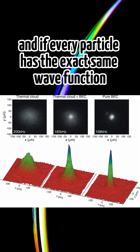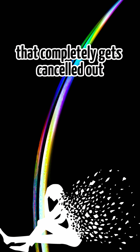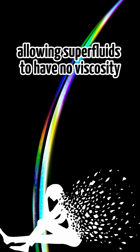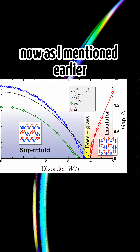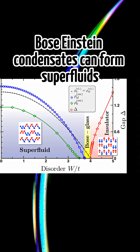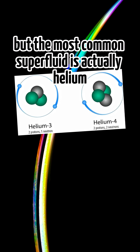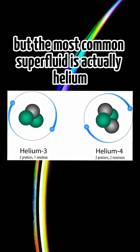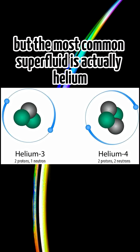And if every particle has the exact same wave function, that completely gets cancelled out, allowing superfluids to have no viscosity. Now as I mentioned earlier, Bose-Einstein condensates can form superfluids, but the most common superfluid is actually helium.